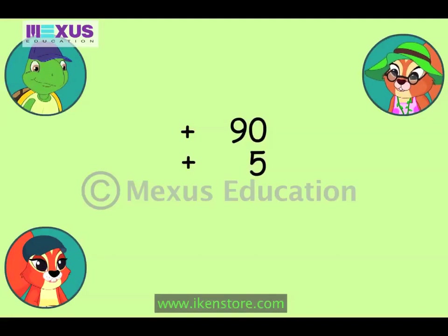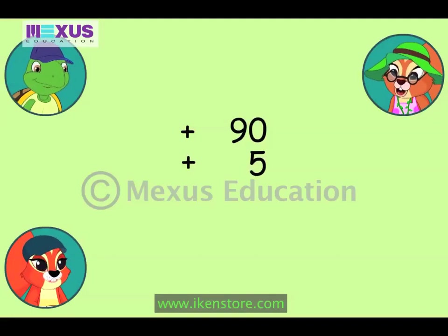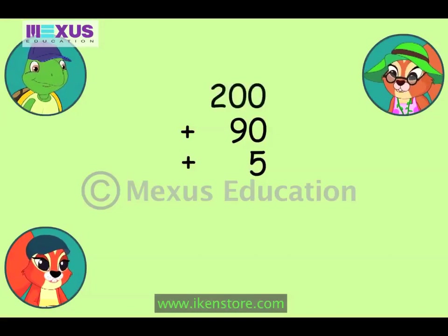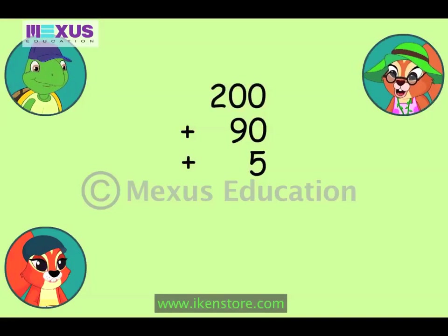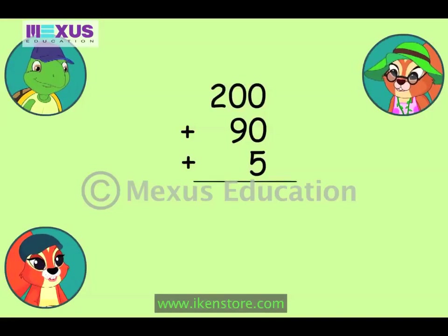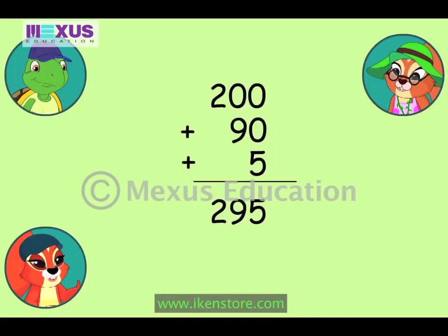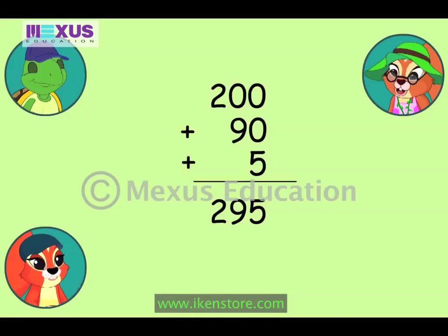So, if one sack has hundred buttons, two sacks would have… Two hundred. Correct, Max. So, the total is two hundred and ninety-five. You are right, my dear.